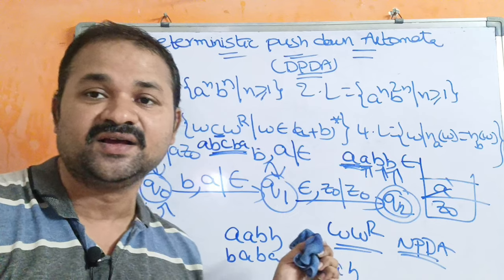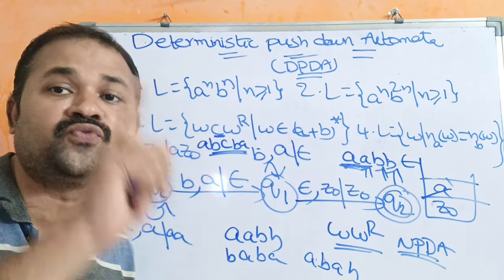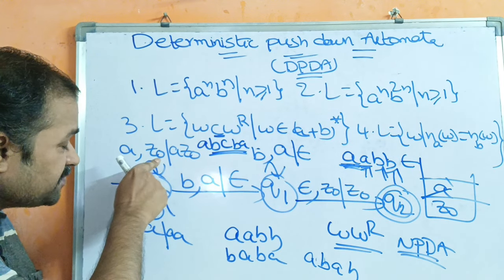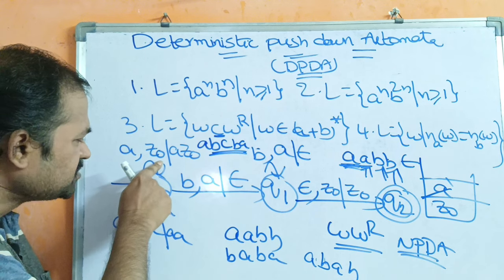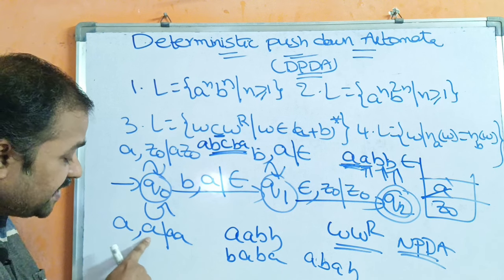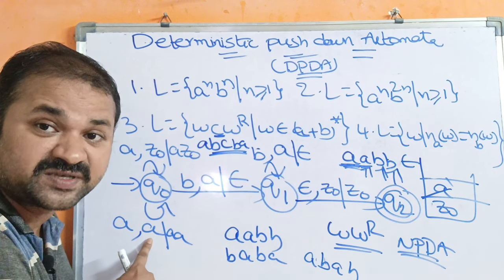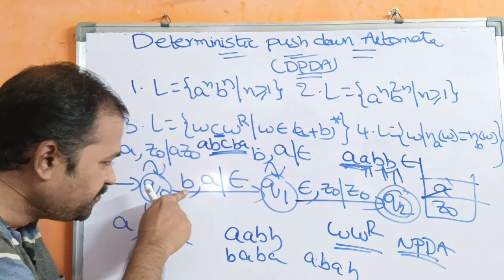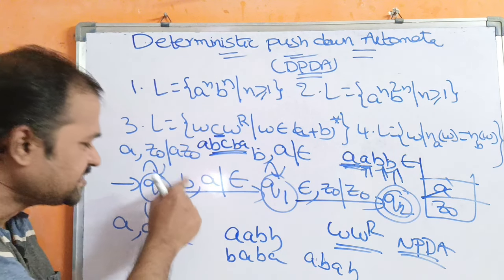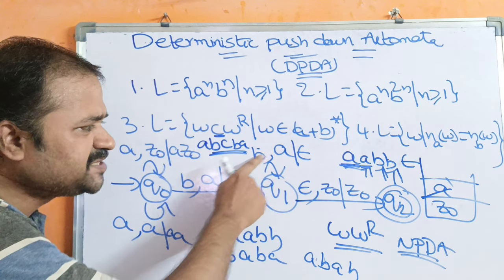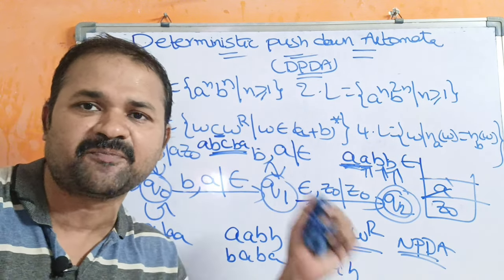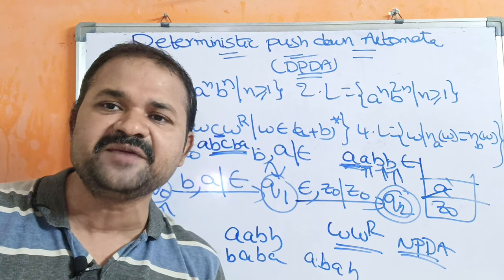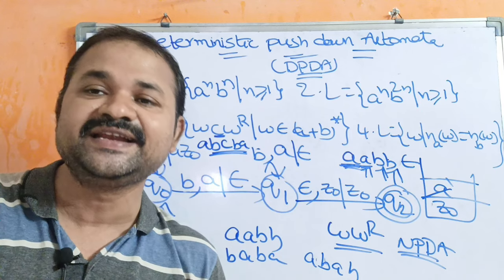Why is the fourth example called DPDA? Because on applying an input symbol, we move to only one state. On applying A on Q0 when the stack's topmost symbol is Z0, we stay at Q0. If the input symbol is A and the topmost symbol is A, we also stay at Q0 — these are two different transitions but each leads to only one state. If the input symbol is B and the stack's topmost symbol is A on Q0, we move to Q1 only. So traversing to only one next state makes it DPDA, while traversing to different states makes it NPDA.